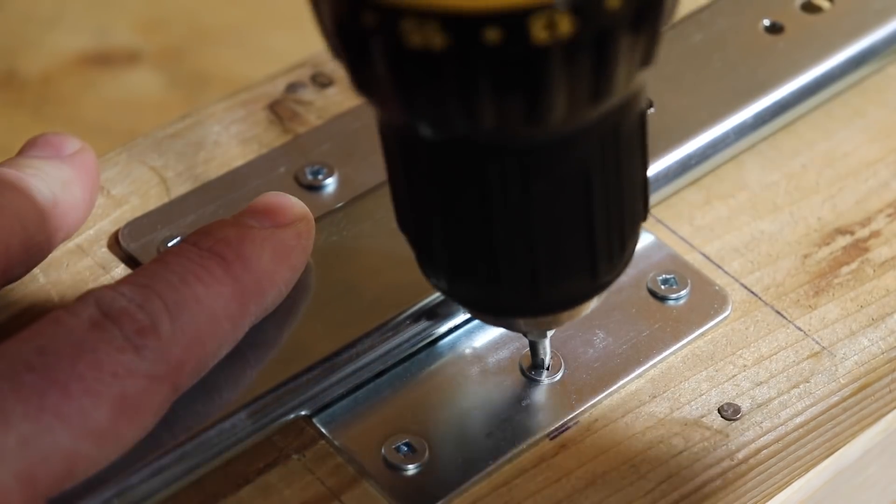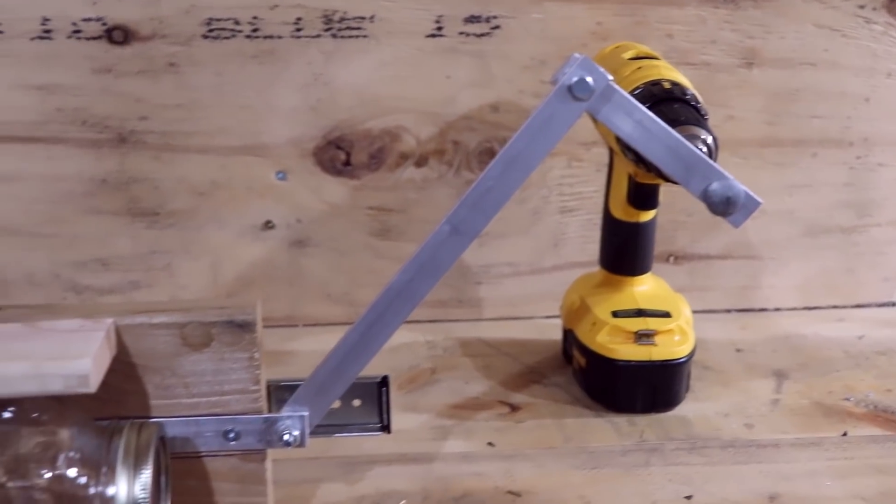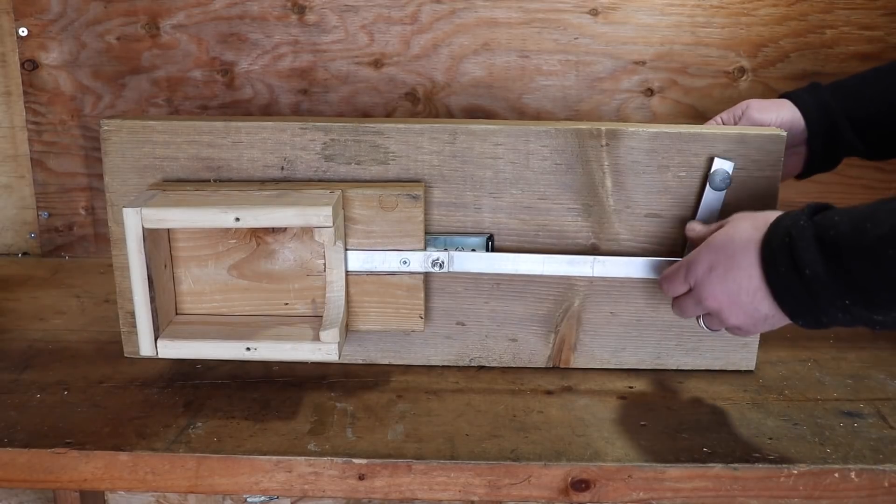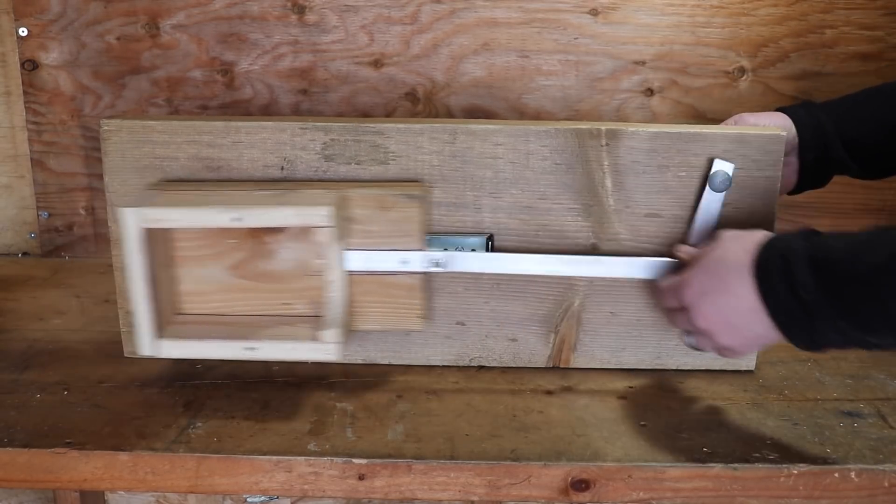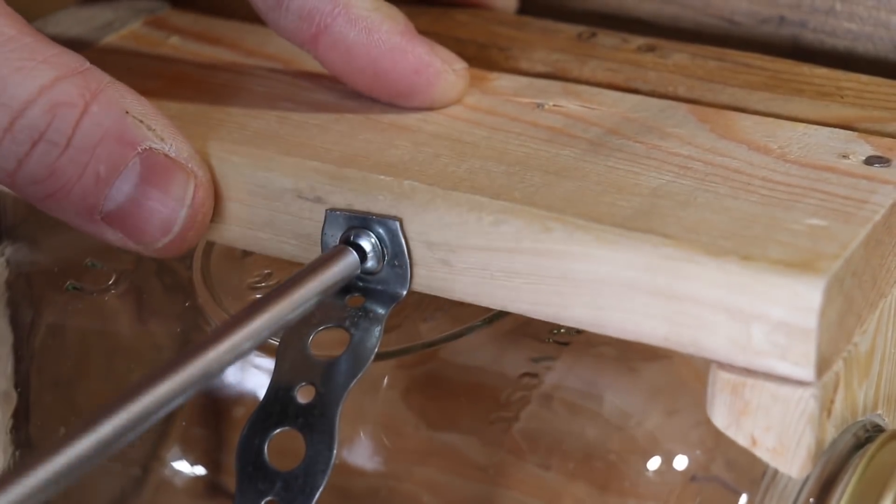Next, I used the scrap wood to add a simple jar holder to the drawer slider and screwed on another piece of aluminum as an extension. Then after bolting it to the connecting rod, the basic mechanism was complete. So finally, I used some more scrap wood to construct a simple frame, some metal strapping to secure the jar in place, and now I think we're ready for a test run.